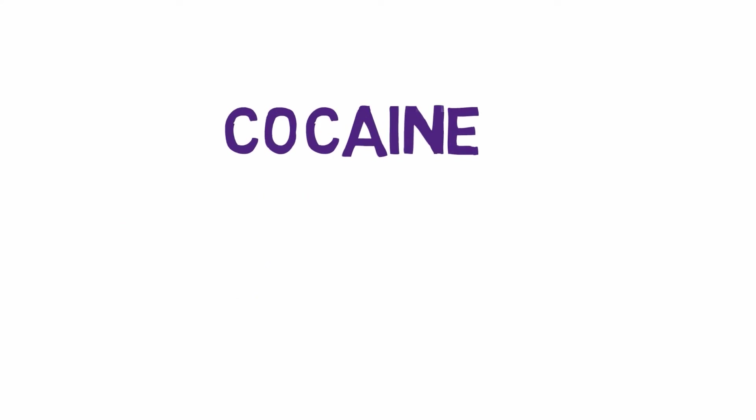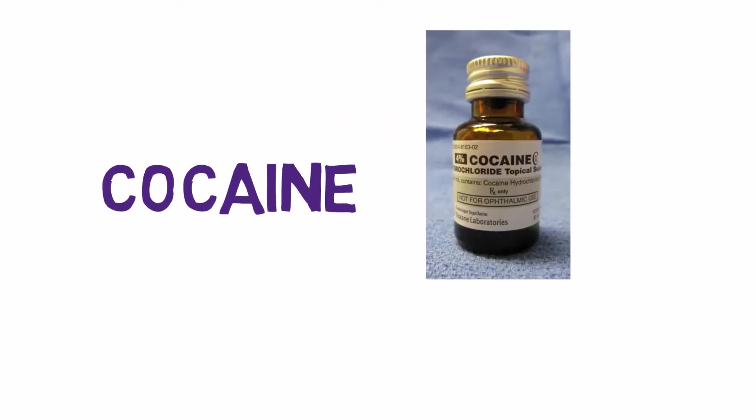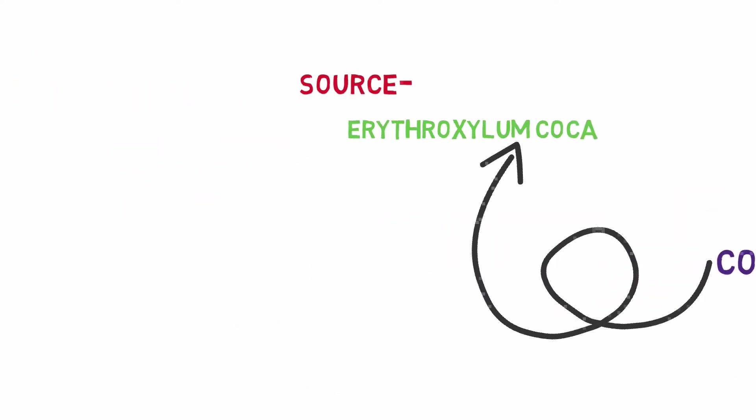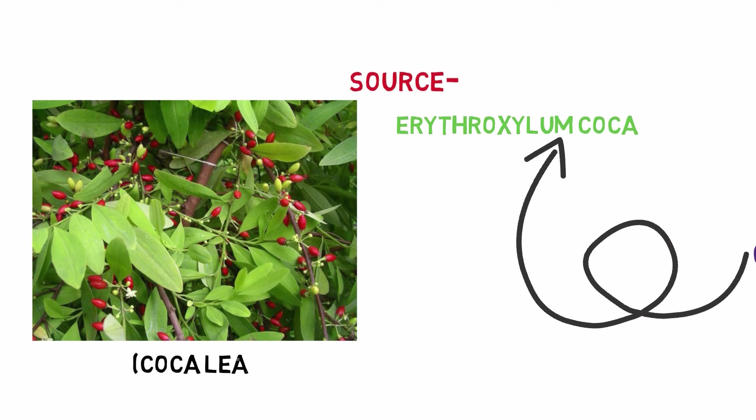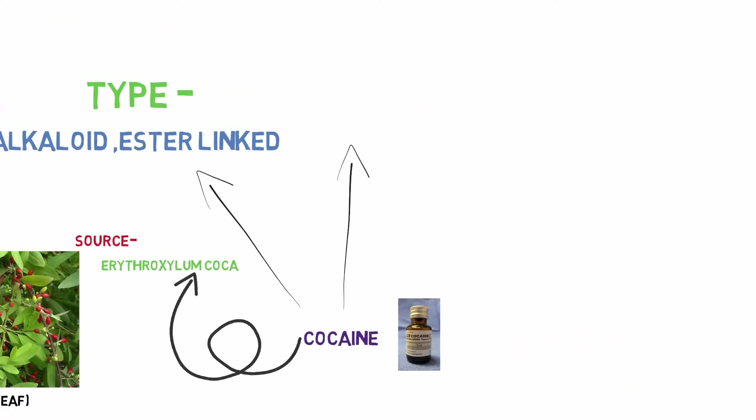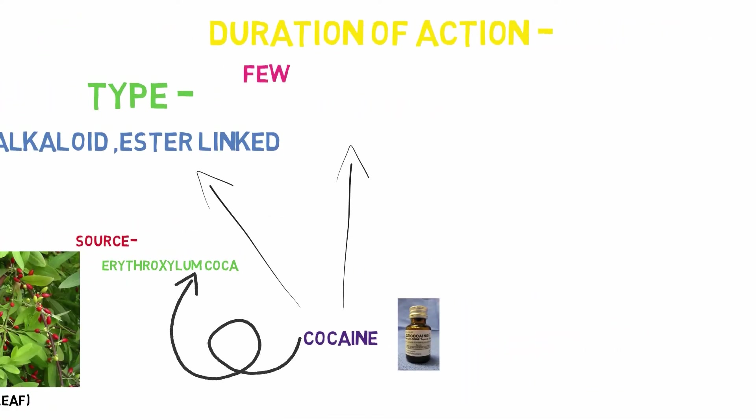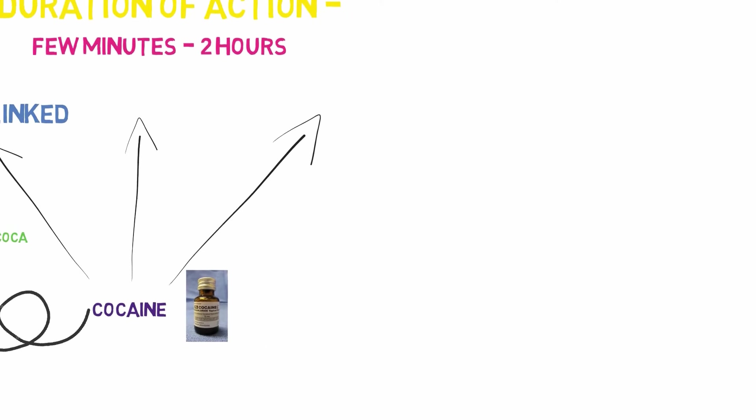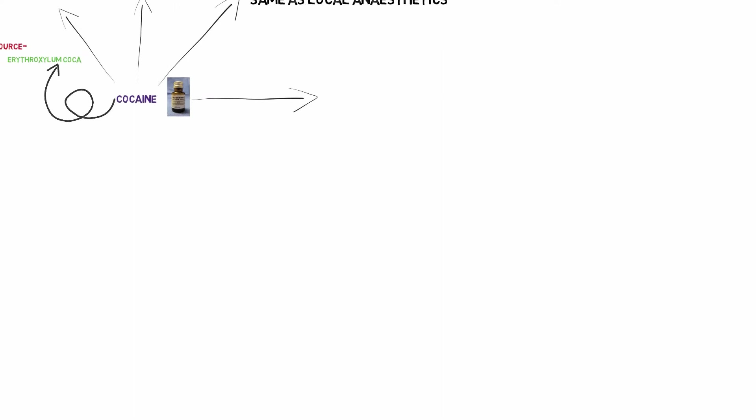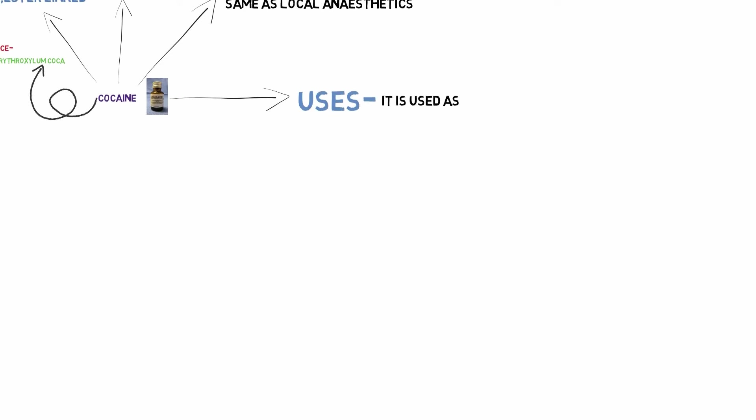The local anesthetics which are commonly used are as follows, starting from cocaine. Source: Erythroxylum coca or coca leaf. Type: alkaloid ester-linked. Duration of action: few minutes to 2 hours. Mechanism of action: same as local anesthetics. Uses: as surface anesthetics and also increases mental alertness and gives a sense of more energetic feeling.